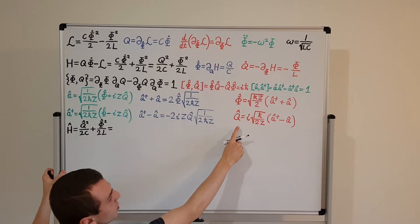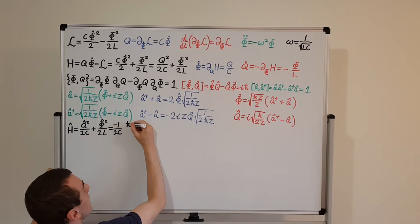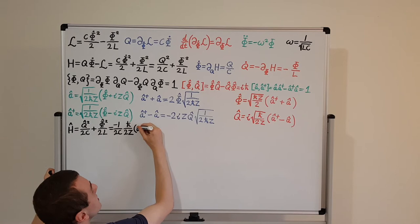When we square Q-hat, we get i squared, which is minus 1. So that gives minus 1 on 2C, and squaring the square root leaves h-bar on 2Z. Then we need to square the difference (a dagger minus a) squared.